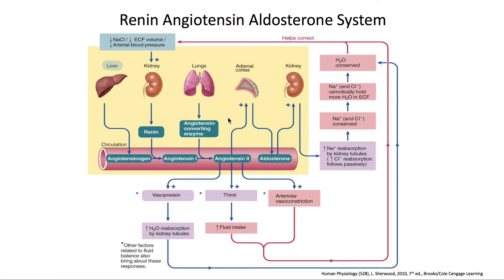Our whole goal is to increase blood pressure to make up for the low blood pressure that was detected by the kidney. The next thing angiotensin 2 does is it increases thirst, which results in increased fluid intake, which will help with our arterial blood pressure and ECF volume. It also activates arterial vasoconstriction, and when that occurs, you have an increase in the total peripheral resistance of the blood, which results in a larger blood pressure.